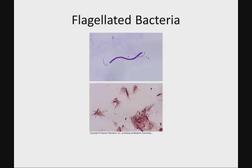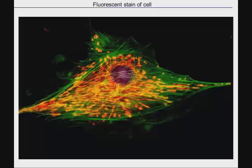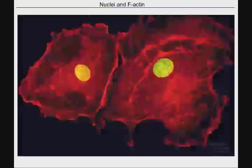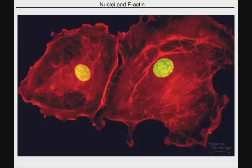You have bacteria that have flagella, which we'll talk about — they use them to move around. You have all kinds of cool microscopy. This is fluorescent microscopy, where we're staining different proteins in the cell. These are components of the cytoskeleton in this picture and in this one. So we'll talk about these different aspects of cells as we cover cellular anatomy.